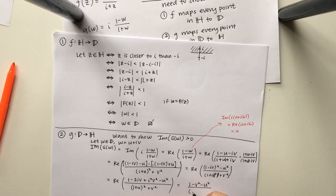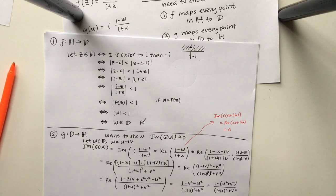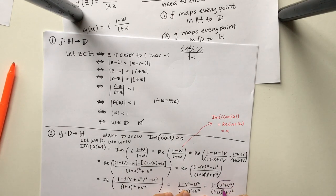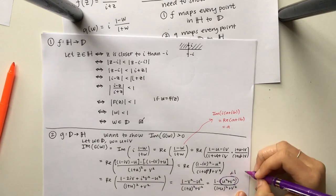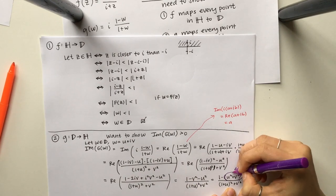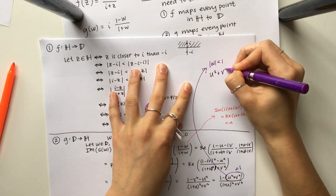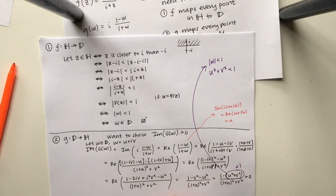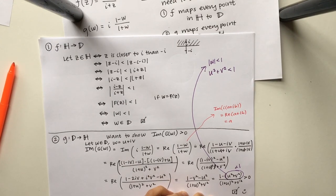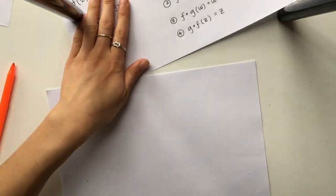So notice that the only imaginary part is just that 2iv in the numerator, so I can take that out and the rest is all real, so I can get rid of my quantifier of the real part. Okay so now notice this u squared plus v squared is less than 1, and the reason I know that's less than 1 is because I know that w has to be bounded by 1 since it's a unit disk and the modulus is defined as the real and the imaginary part squared. So since that has to be less than 1, then likewise that whole thing must be greater than 0, which is what we wanted to show.